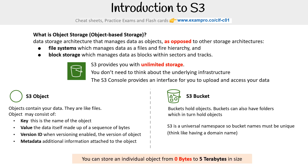An individual object can be between zero bytes and up to five terabytes. You have unlimited storage, but you can't have files of incredible size — five terabytes is a lot, but nothing beyond that for a single file. Also understand that you can actually have a zero-byte file, and for associate certifications, that can be an actual exam question.